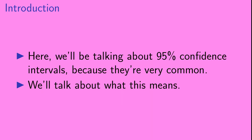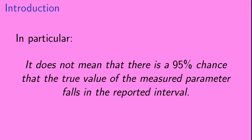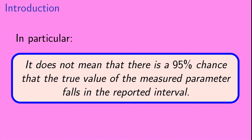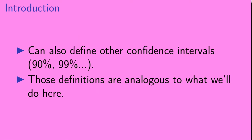We'll be talking about what these confidence intervals actually mean. In particular, let's clear up a common misconception at the very beginning: if a 95% confidence interval is reported for some measured parameter, it does not mean that there is a 95% chance that the true value of the measured parameter falls in the reported interval. While we'll be talking about 95% confidence intervals, one can also define other confidence intervals like 90% or 99%, and those definitions are analogous to what we'll see here.